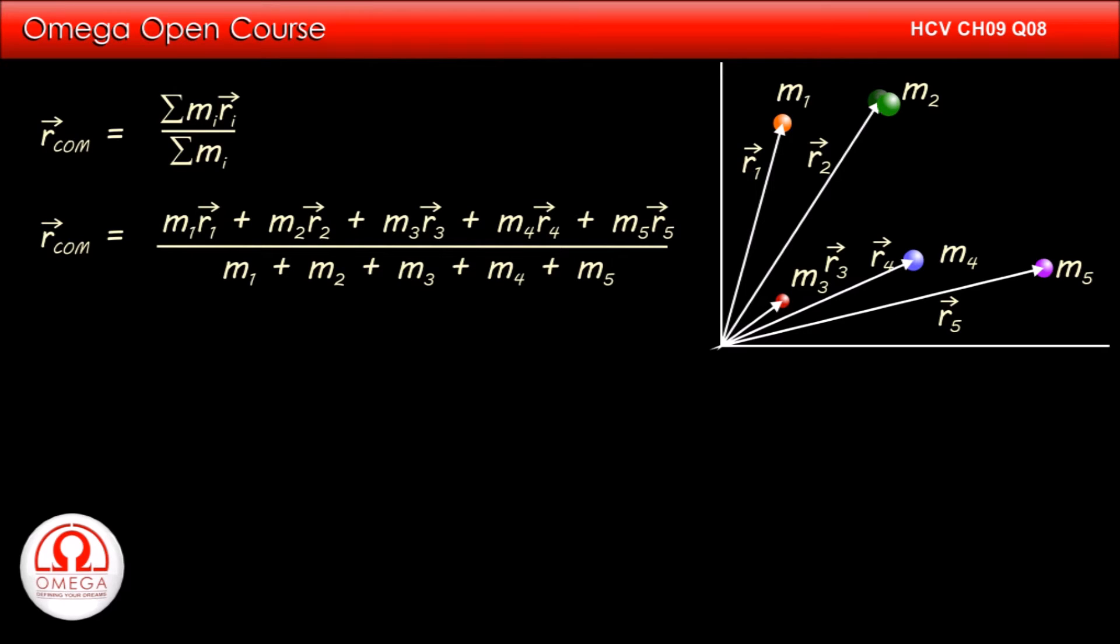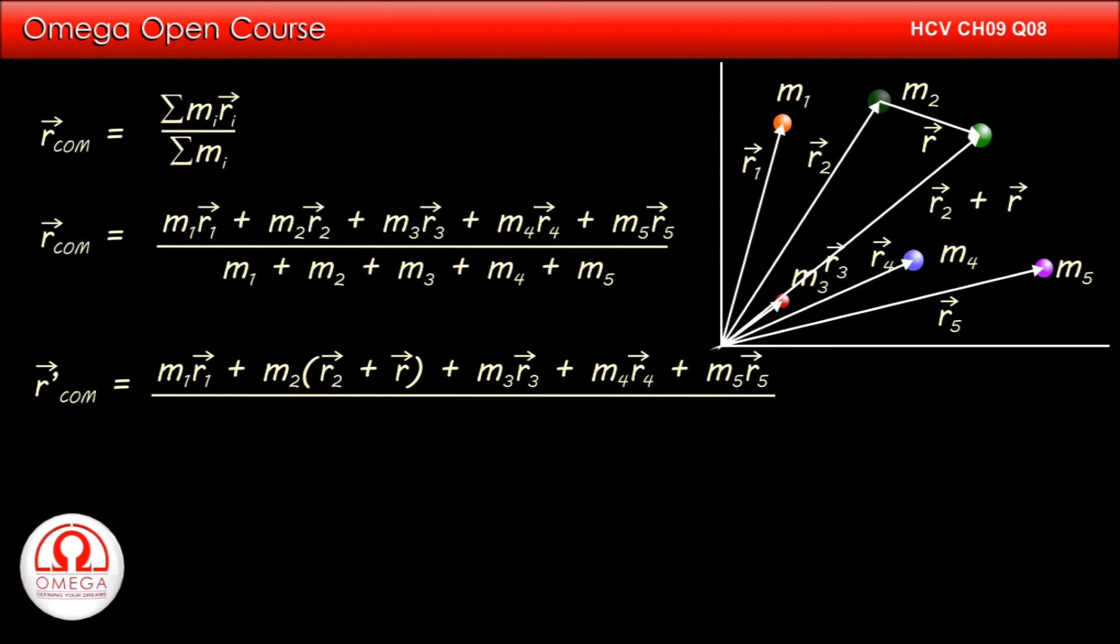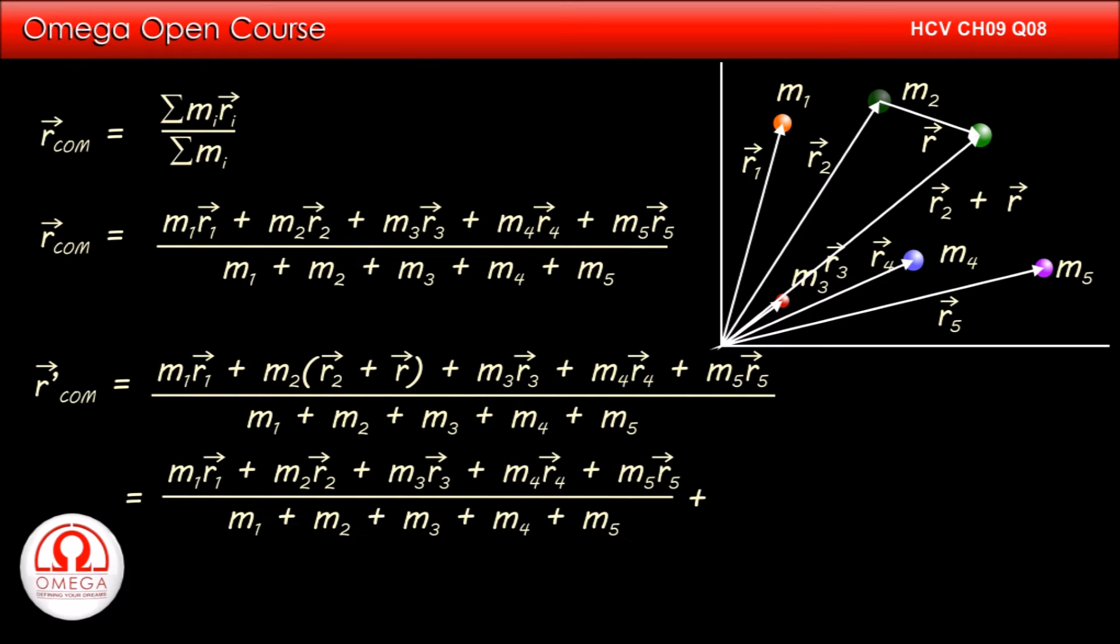Now let us move m2 by vector r. The new position of m2 becomes vector r2 plus vector r. The new position of center of mass is now m1 vector r1 plus m2 vector r2 plus vector r plus m3 vector r3 plus m4 vector r4 plus m5 vector r5 divided by m1 plus m2 plus m3 plus m4 plus m5. This can be rearranged to write m1